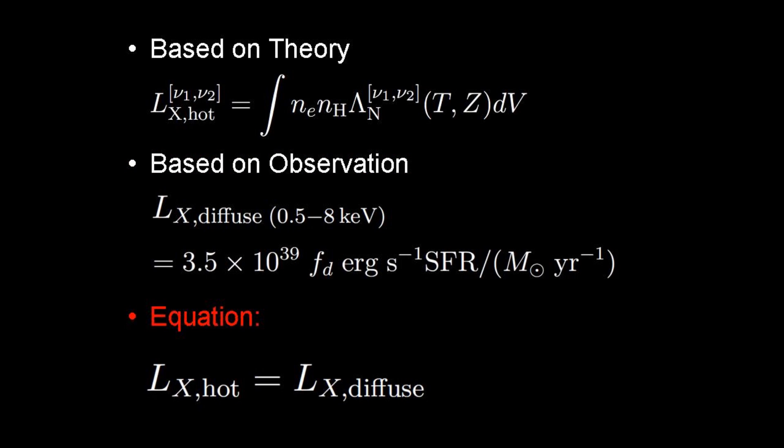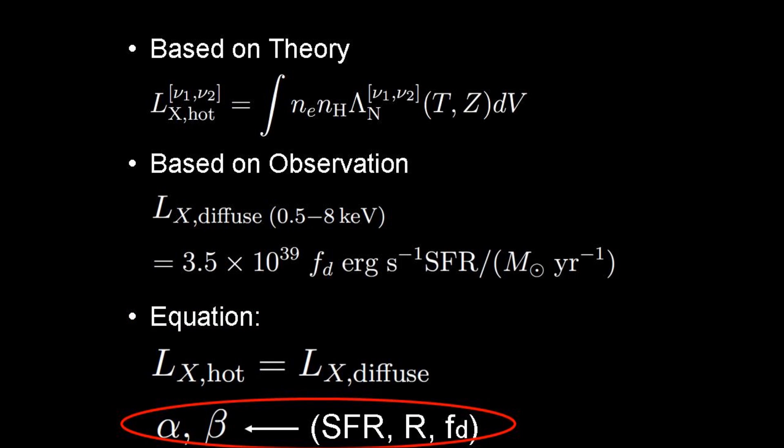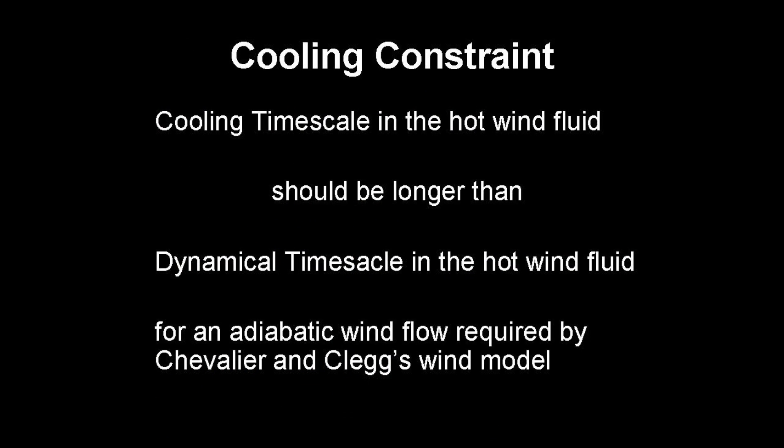If we take these two equations to be equal with each other, we can basically constrain wind parameters alpha and beta by star formation rate, wind-launching radius r, and the diffusing fraction fd.